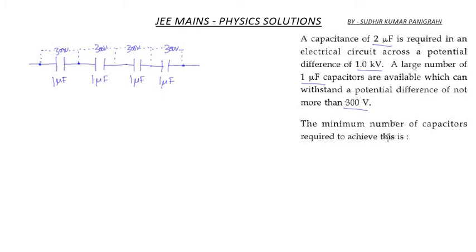The minimum number of capacitors required to achieve this is: First thing, we have one microfarad capacitors which cannot withstand more than 300 volts. So in order to make the equivalent capacitance stand more than one kilovolt, what we have to do is connect four one microfarad capacitors in series.